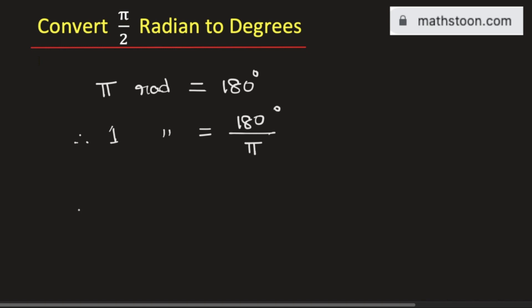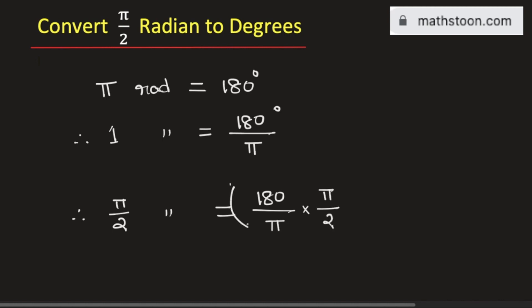So, pi by 2 radian is equal to 180 divided by pi times pi divided by 2 degree.